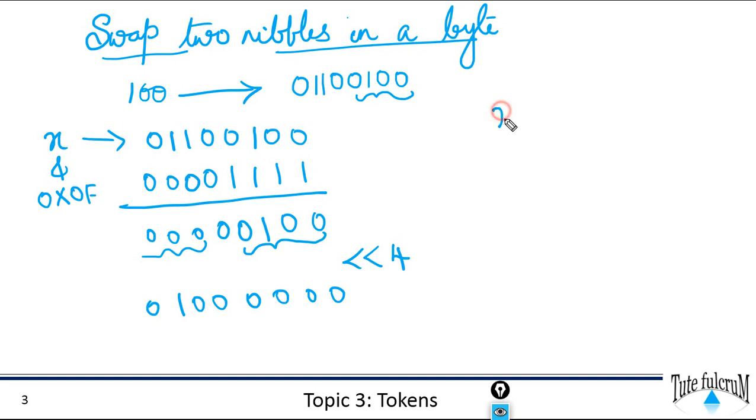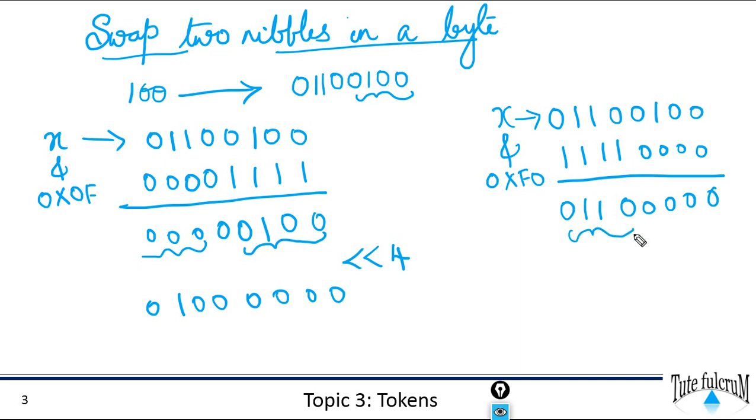Same way we need to extract the other nibble as well. So we will take x 01100100. Now to extract the higher nibbles we will AND this with 0xf0. So here the higher part will be 1111 and the lower values will be 0. So now if you perform an AND operation you could see that we are extracting only the higher nibbles. So this will be 01100000. So we have extracted the higher nibble as well. Now this if you shift towards your right by 4 bits you will get this onto your extreme right. So your output will be what 00000110.